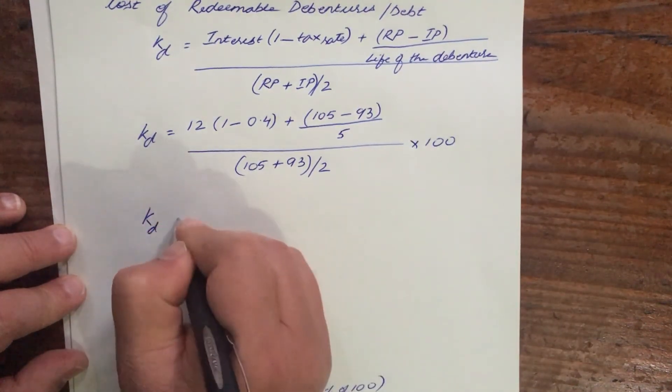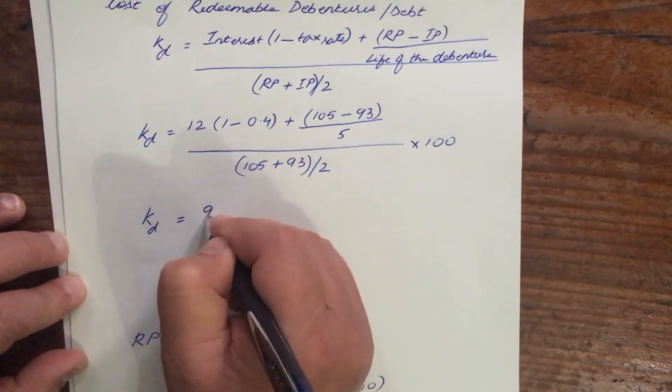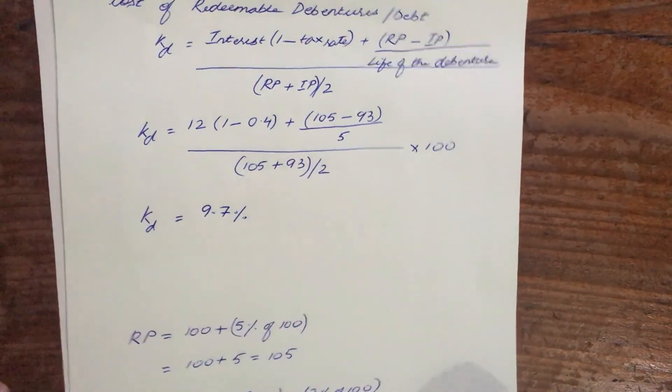So KD, you do your calculation, when you calculate this you will find out you will get 9.7 percent. So that is your answer.